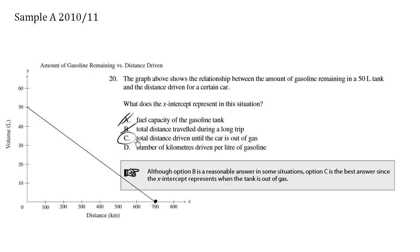Choice D, number of kilometers driven per liter of gasoline. Now here we're talking about fuel efficiency, and the fuel efficiency would relate to the graph's slope.